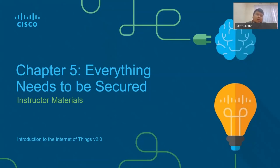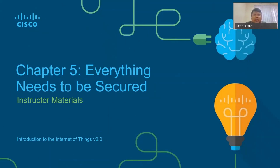IoT security is a very important topic because IoT involves billions of devices — for example, CCTVs, smart home devices, smart hubs, and everything. All of these things become smart because they are equipped with microcontrollers, essentially miniaturized computers. All of these miniaturized computers have vulnerabilities which can be exploited by hackers.